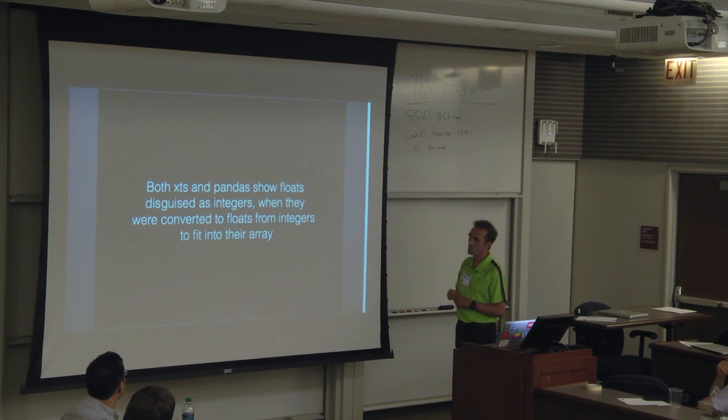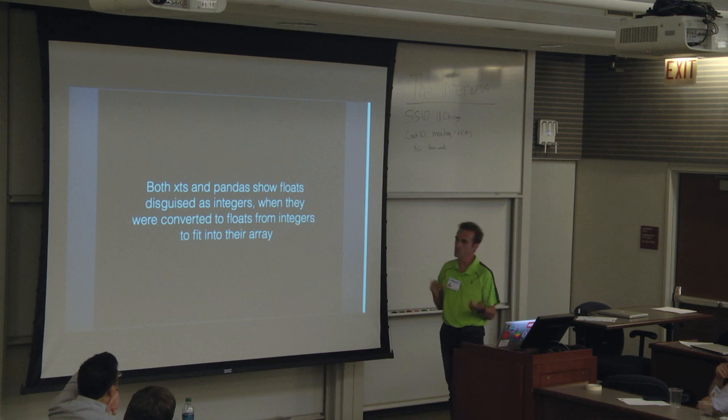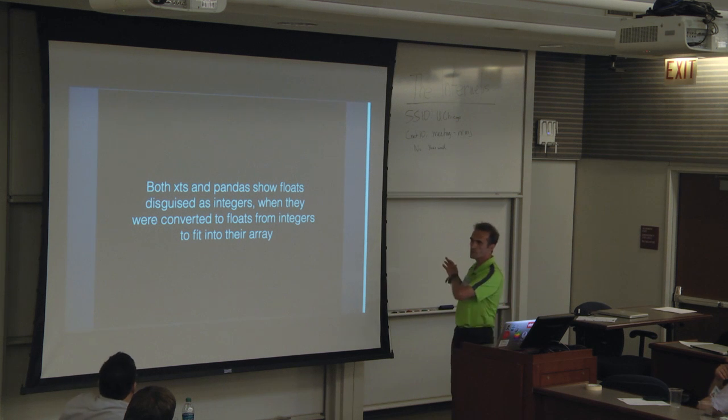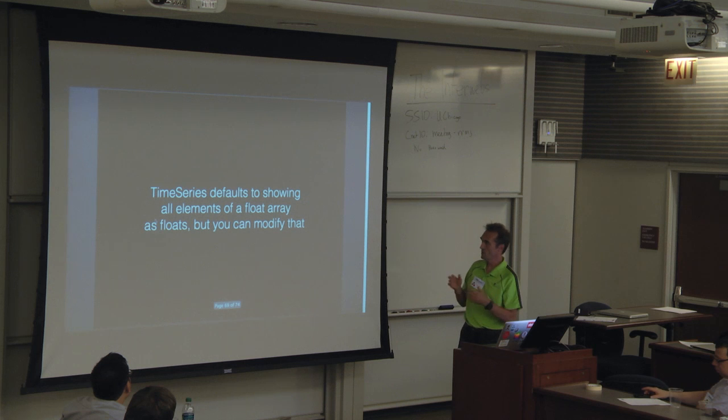Going back to that, showing that big int, both XTS and pandas show floats disguised as integers when they're converted from floats, or to floats from integers to fit an array. So obviously they're all floats in that array, but they're showing as ints.